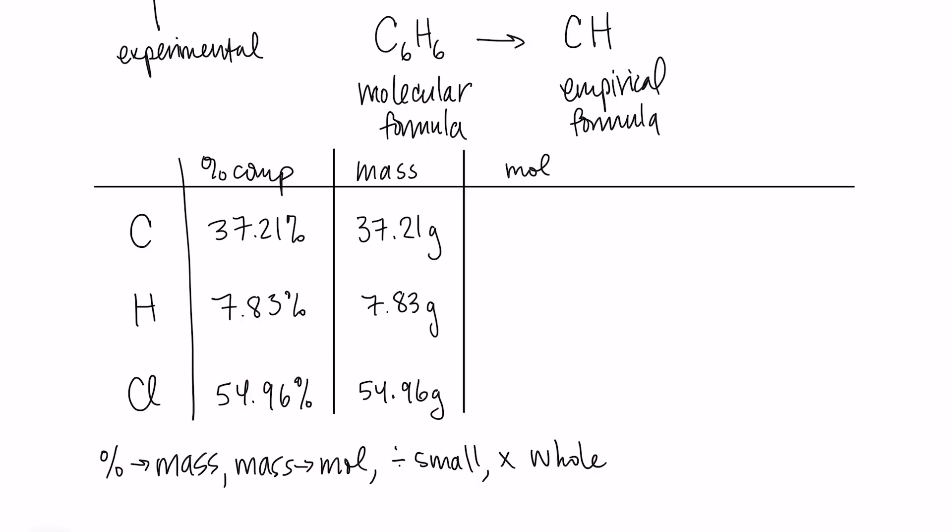And to get to moles, we have to divide by the molar mass of that atom for each atom type. So for carbon, we're going to divide by 12.01. And we get 3.098 moles of carbon. For hydrogen, we divide by 1.0079. And that gives us 7.767 moles of hydrogen. And for chlorine, we divide by 35.45. And that gives us 1.548 moles of chlorine. So we have our moles.